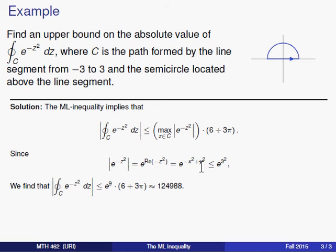So the best we can do, the largest we can make this expression, is e to the three squared, or e to the nine. And that tells us that the value of our integral has a modulus which is less than or equal to e to the nine times 6 plus 3π. Now feeding that into a calculator, you'll get something that's roughly 125,000. And that's what the ML inequality will tell us.